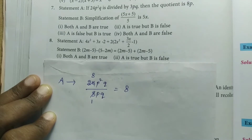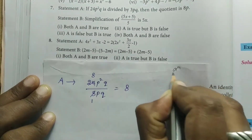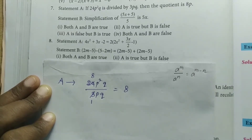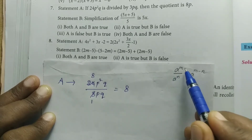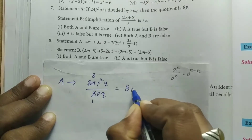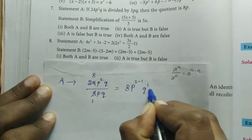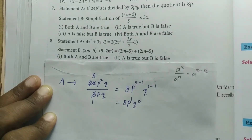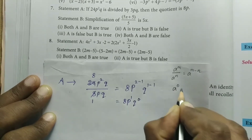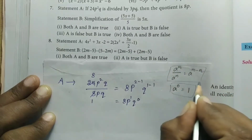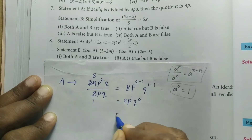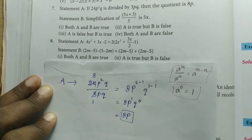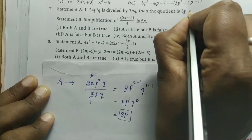The format we use: a^m divided by a^n equals a^(m−n). We use this exponential form here — when the base value is the same in division, we subtract the power values. Substituting: P^(2−1) then Q^(1−1), giving us 8 × P^1 × Q^0. Since a^0 = 1, Q^0 equals 1. So the answer is 8P. Statement A is TRUE.